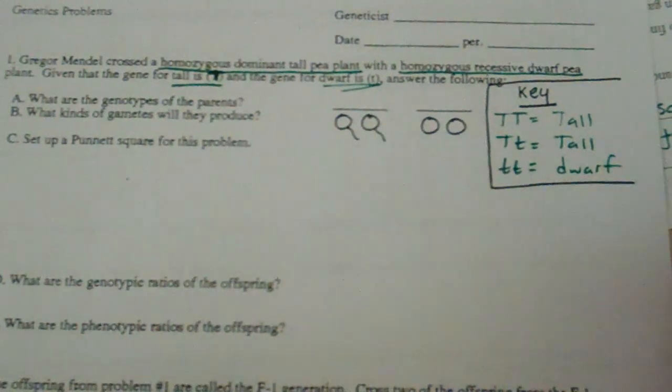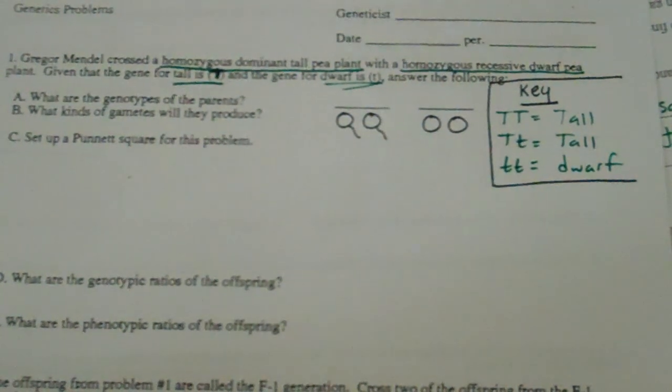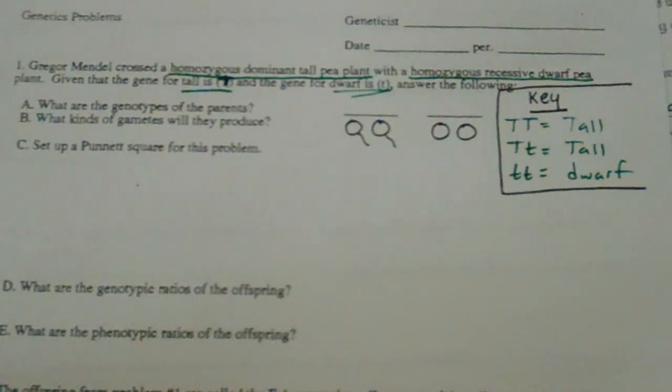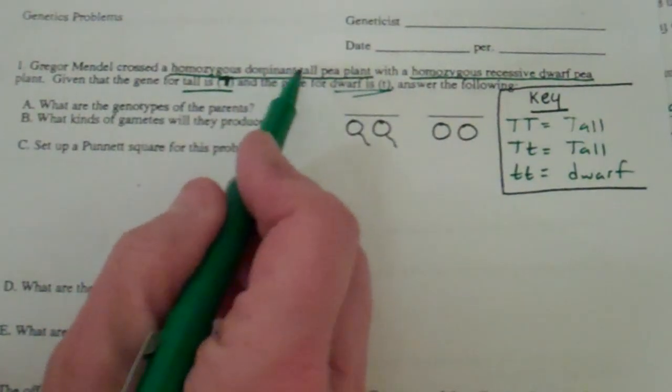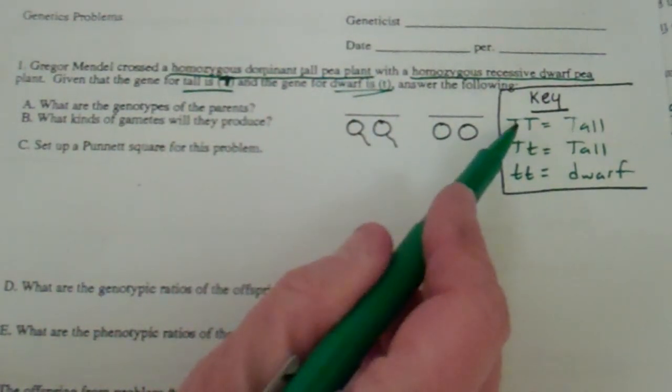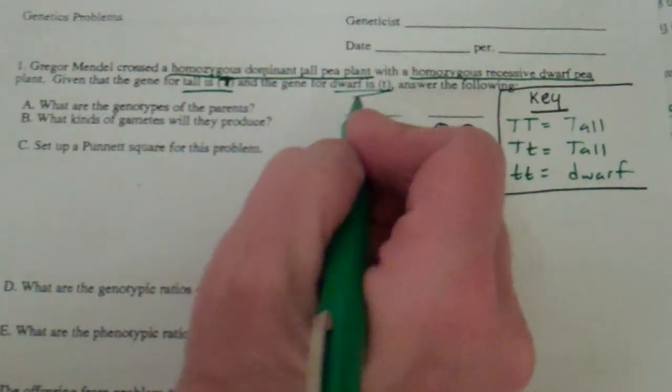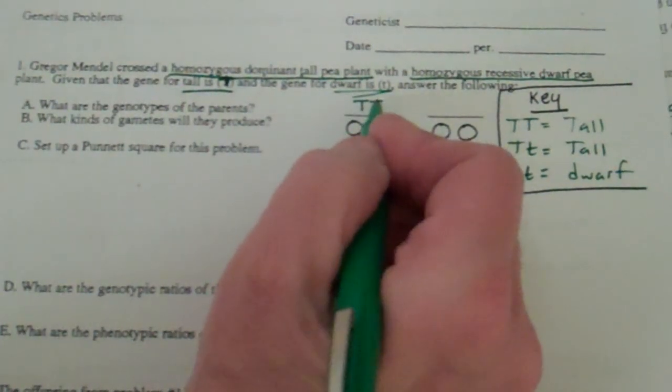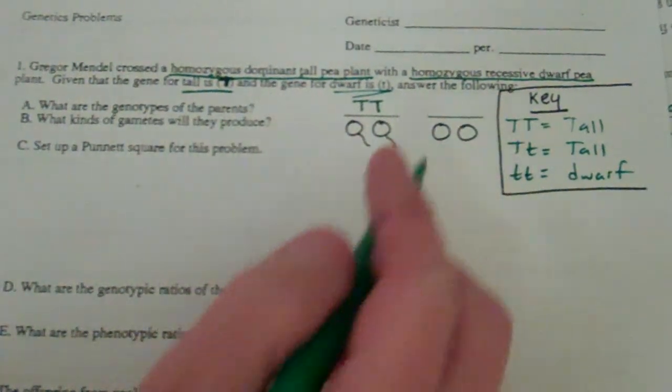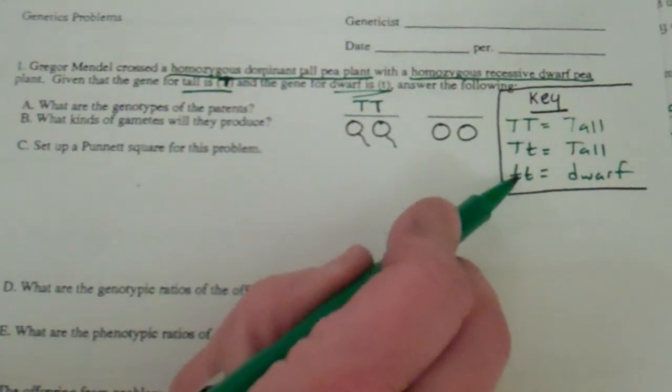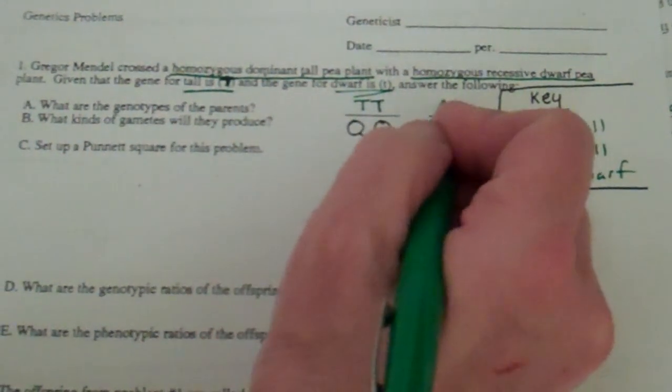Now look at the rest here. What are the genotypes of the parents? Well, it says homozygous dominant tall, that would be this one, homo tall. So I put down one parent there, big T big T, with homozygous recessive dwarf is little t little t, so we're going to put little t little t.